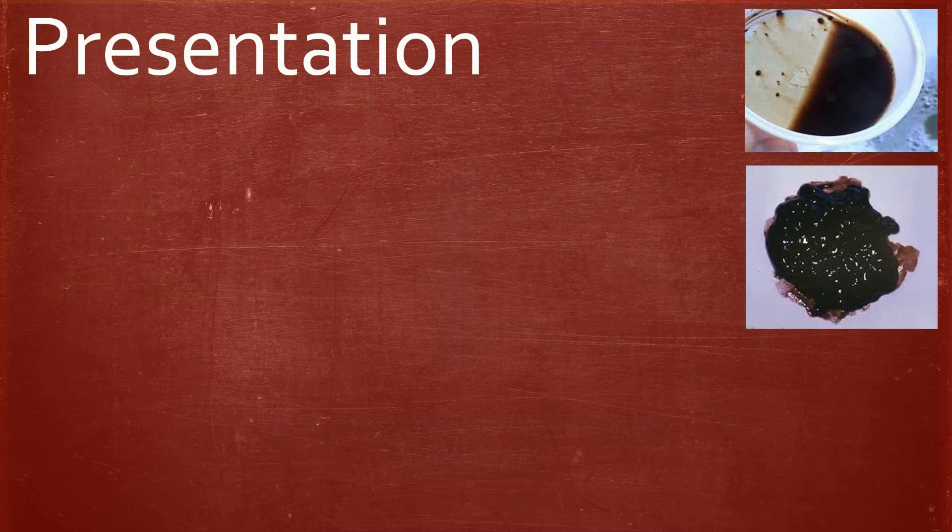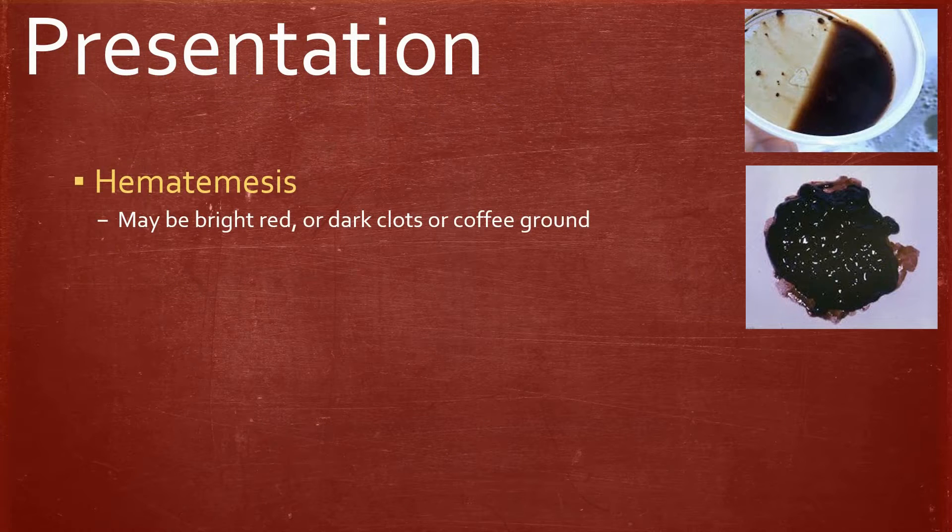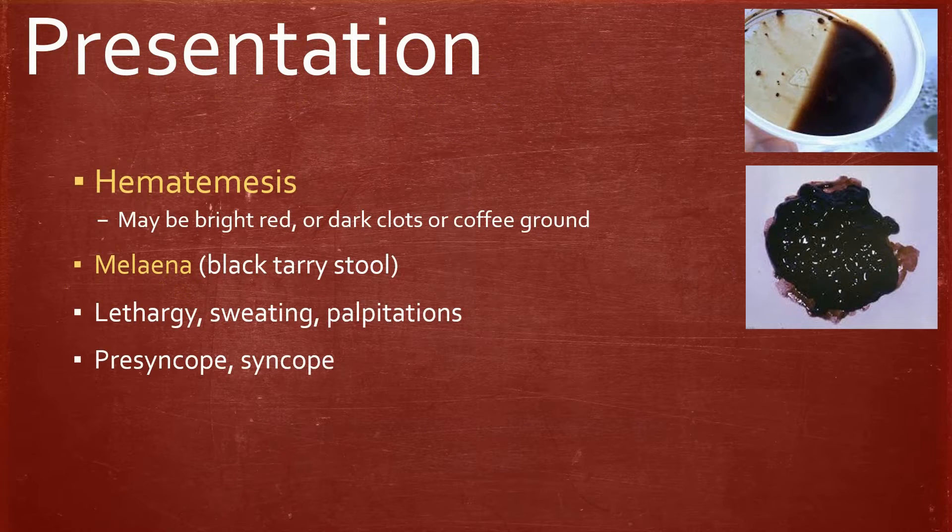The condition typically presents with hematemesis, which may be bright red, or dark clots, or coffee ground, melena, which is black tarry stools, lethargy, sweating, palpitations, presyncope, syncope, collapse, or shock.